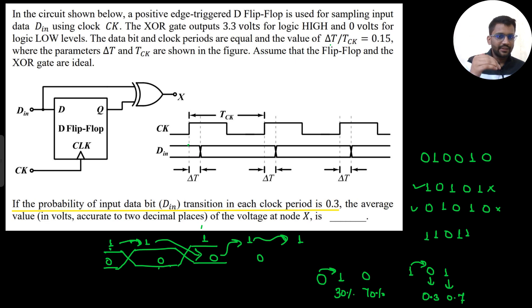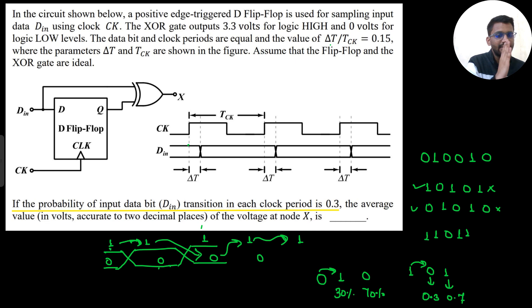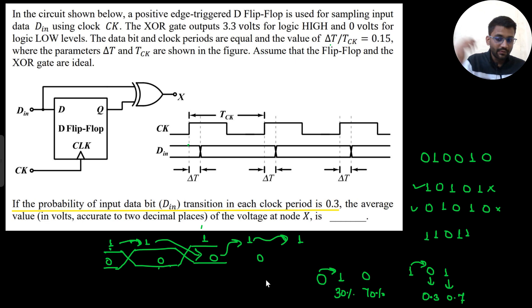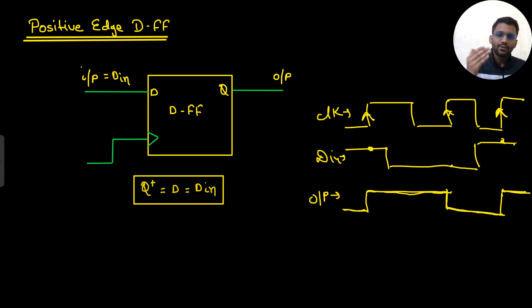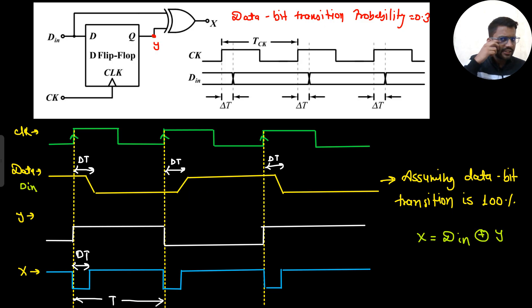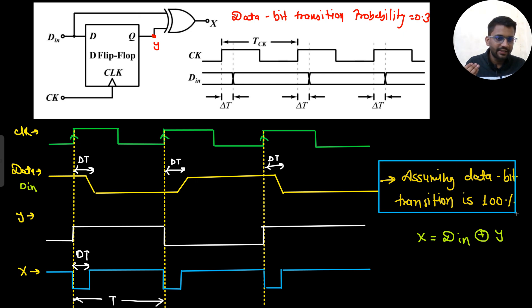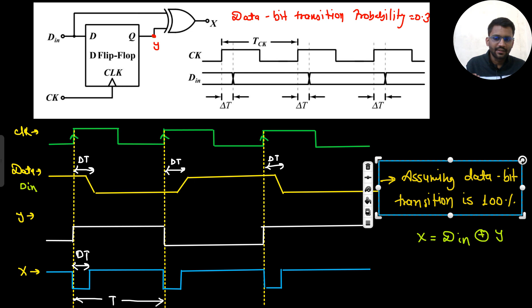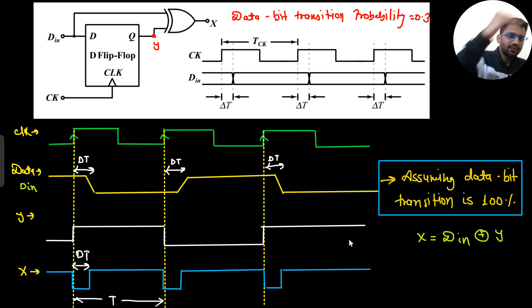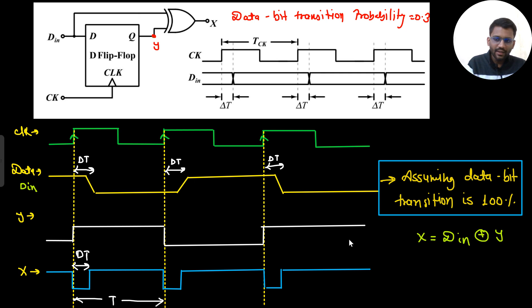To summarize: the clock and data are given. The probability of data transition is 0.3 — if you have 1, there is 30% chance the next cycle will be 0 and 70% chance it stays 1. First, we understood the D flip-flop's working. Then we assumed 100% data bit transition (alternating 1, 0, 1, 0), calculated Y from the flip-flop, passed D_in and Y through the XOR gate to get X, then computed the average voltage.